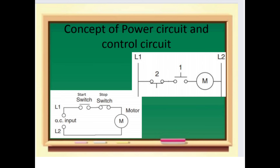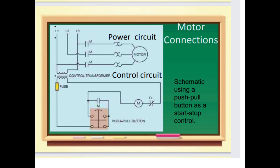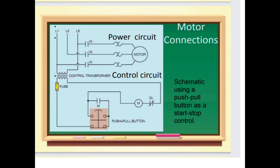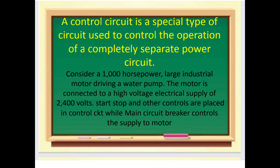This is a motor connection schematic using a push-pull button as a start-stop control. The power circuit is shown above and the control circuit is shown below. The yellow component indicated here is the fuse, and the motor connection is also shown in this diagram. In simple terms, a control circuit is a special type of circuit used to control the operation of a completely separate power circuit.